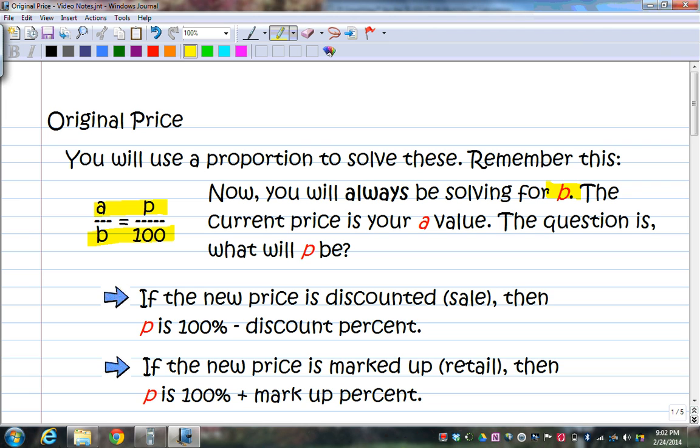The current price, whether it's marked up or a discount, is always going to be the a value. The question is what will the percent be or the p value be? You can't just take it from the word problem and put it into the proportion because it represents something that was already discounted or already marked up. So what you need to do, now look down here I have,